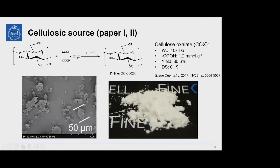The cellulose filler used in our study is not exactly cellulose — it is a new species of cellulose derivatives called cellulose oxalate (COX). It was prepared by our previous colleague three years ago by treating wood pulp fiber with molten oxalic acid dihydrate at 110°C, causing concurrent hydrolysis and esterification for around 15 minutes. The size of COX is very similar to microcrystalline cellulose (MCC), which we also included as a reference.